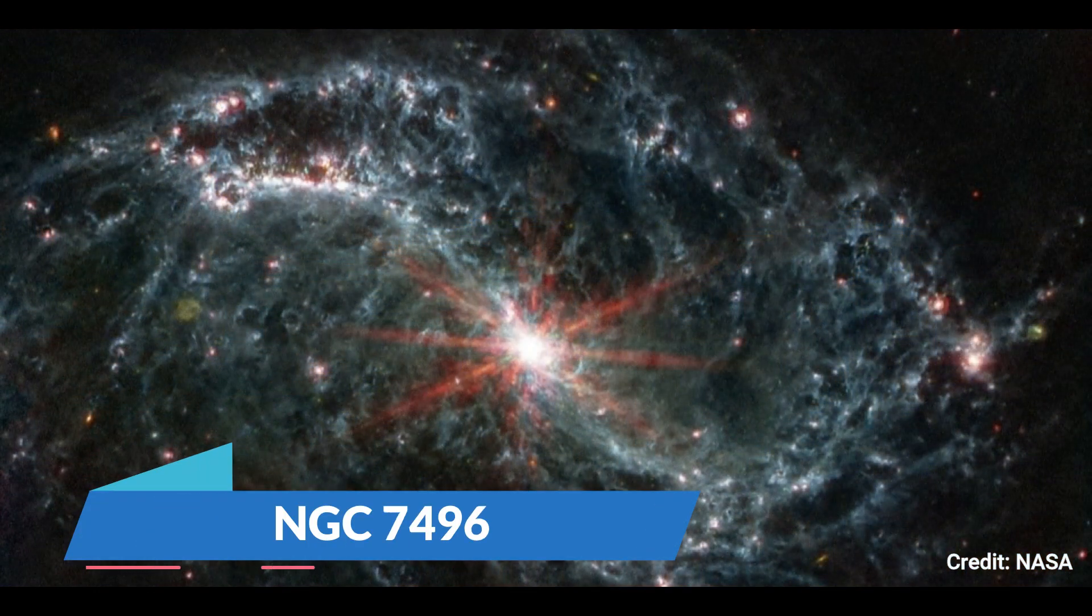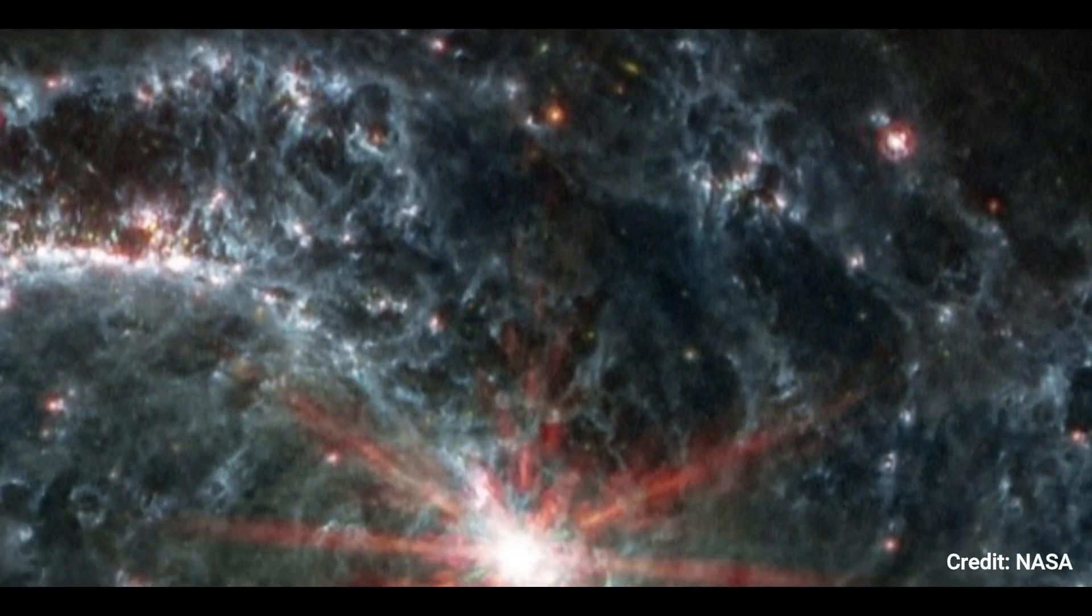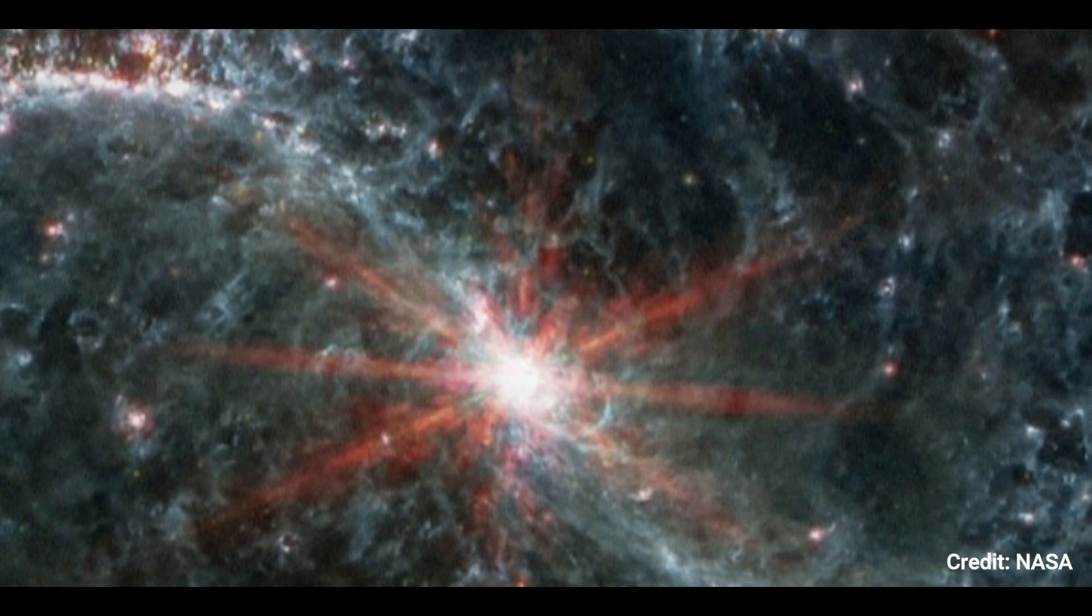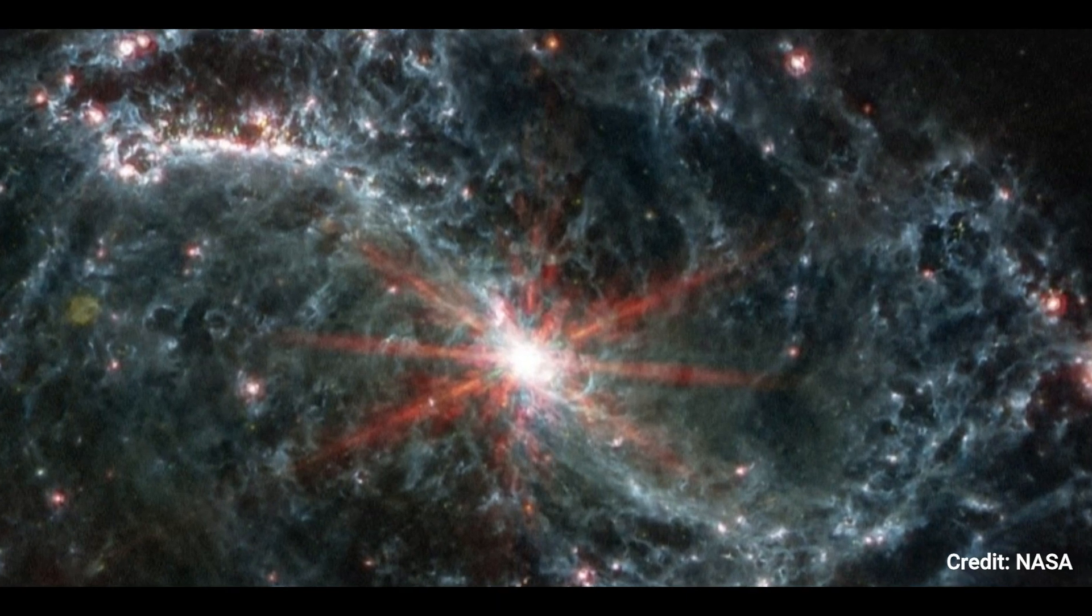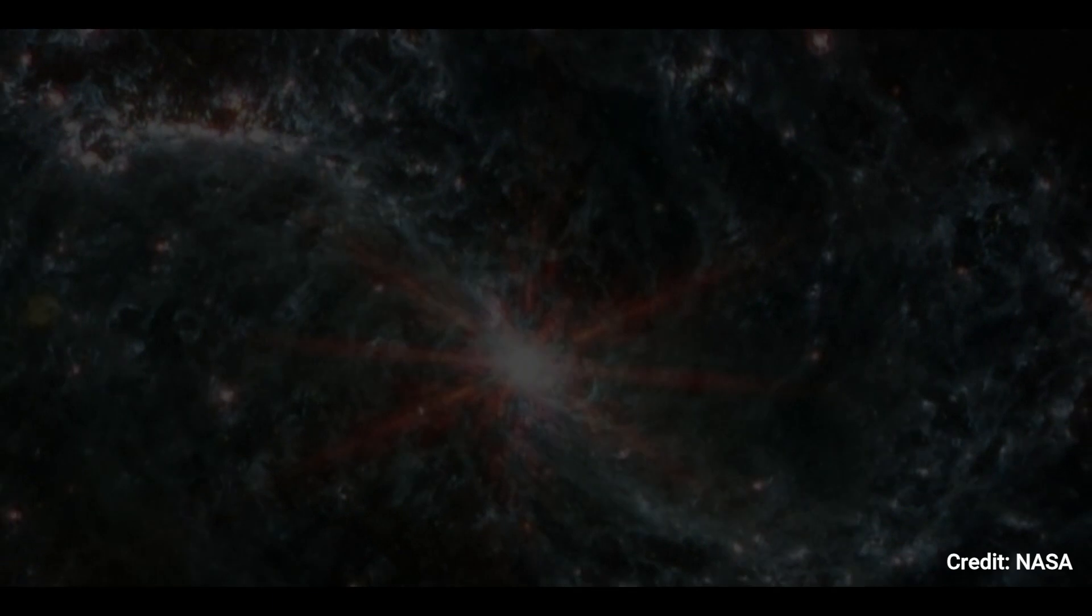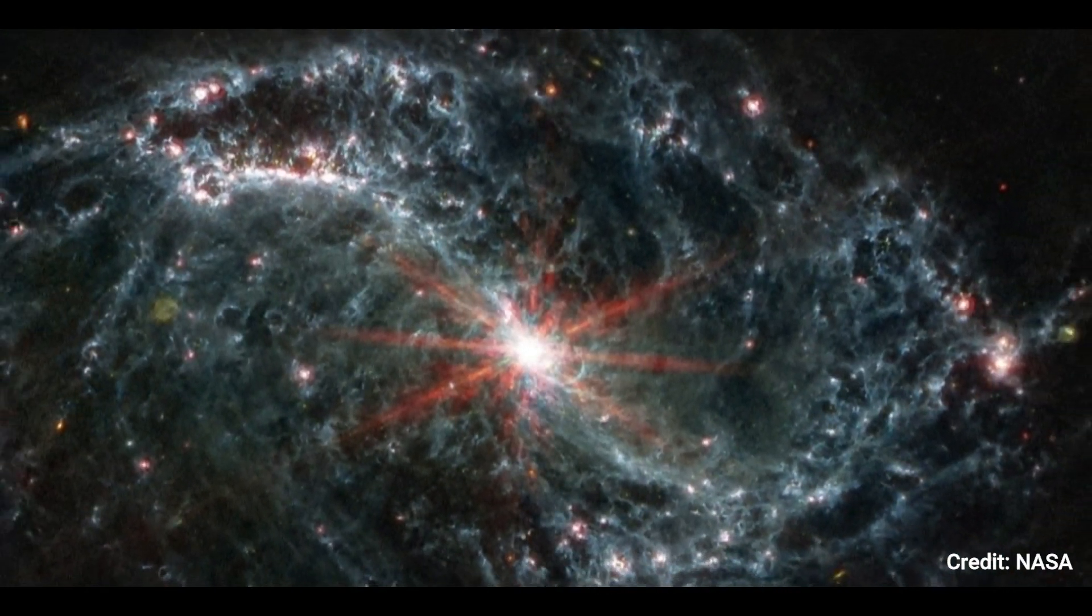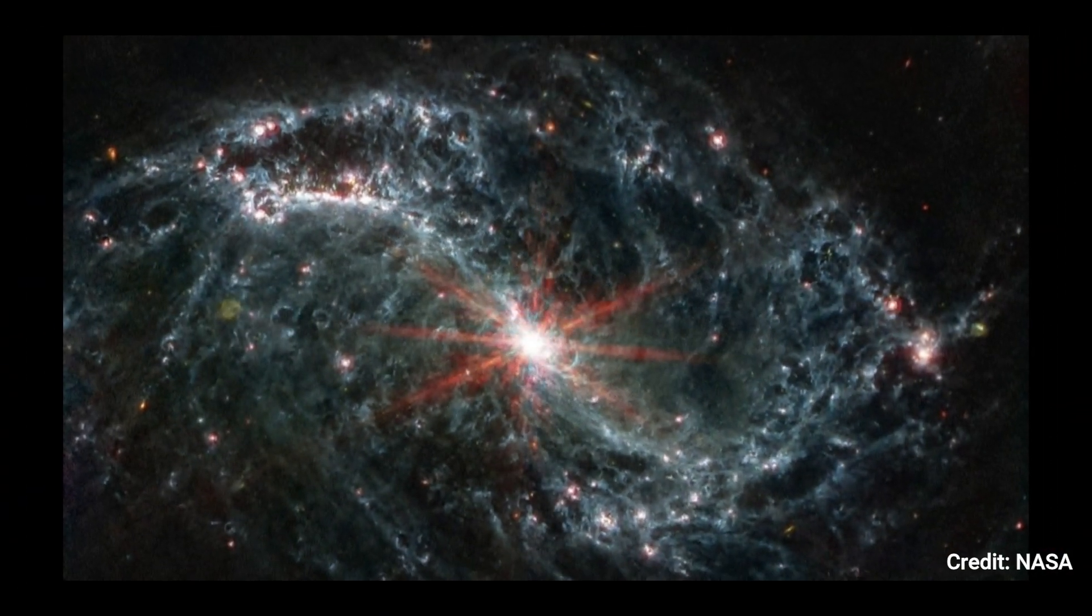Number 8. NGC 7496. Webb's mid-infrared instrument took this image of the nearby galaxy NGC 7496, which includes compass arrows, a scale bar, and a color key for reference. The north and east compass arrows indicate the image's orientation in the sky. It's worth noting that the relationship between north and east in the sky is reversed when compared to direction arrows on a map of the ground.